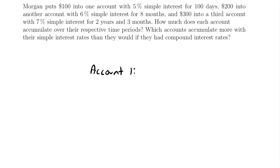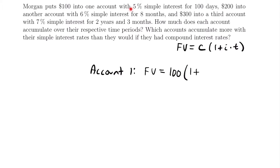Since we are working with simple interest, the equation we're going to use is: future value equals that initial deposit times 1 plus the interest rate times our time value. For her first account, the future value equals $100 times 1 plus 0.05 times her time in years, which is given to us in days — 100 days. Unless a problem states otherwise, we always assume a simple interest rate is occurring annually, which means our time also needs to be measured in years.